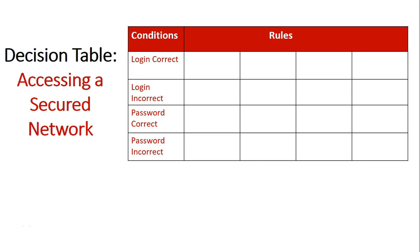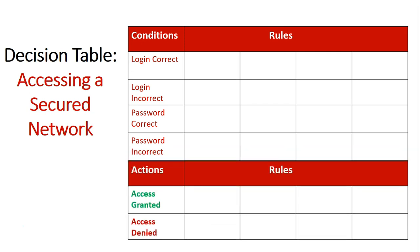The second section of the decision table is the actions. So based on the combination of the conditions occurring, what actions are going to take place? We're talking about accessing a secured network here, so our conditions are: the login is going to be either correct or incorrect, or the password is going to be correct or incorrect.